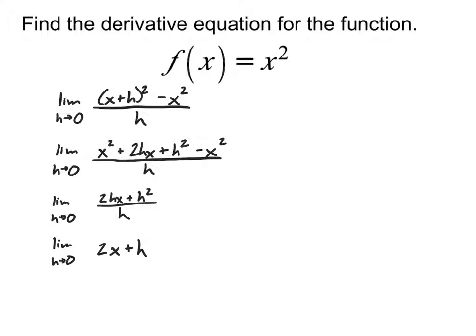I've worked through and simplified it. Notice that I had to simplify before doing the direct substitution — if I tried plugging in zero for h anywhere earlier I would have been dividing by zero. But once the h cancels out, it's no longer a division-by-zero problem. So I wait until that point to plug zero in for h, and 2x plus zero is just 2x. The derivative of x² is 2x, which lets us find the slope of the tangent line quickly at any point on the parabola.